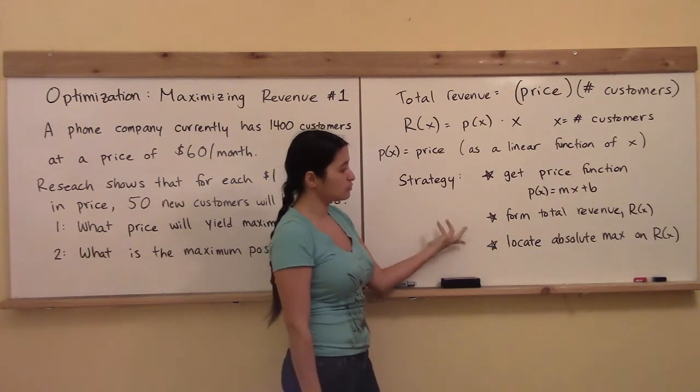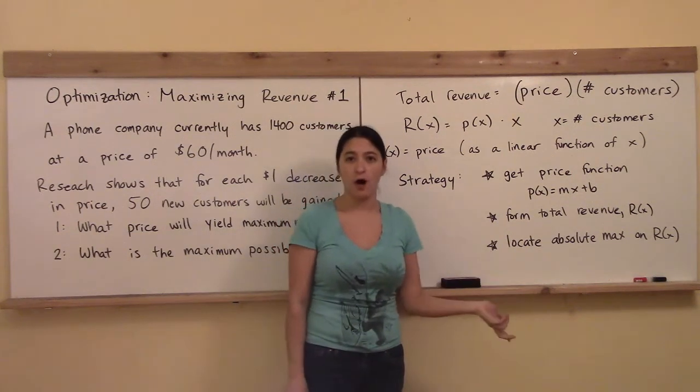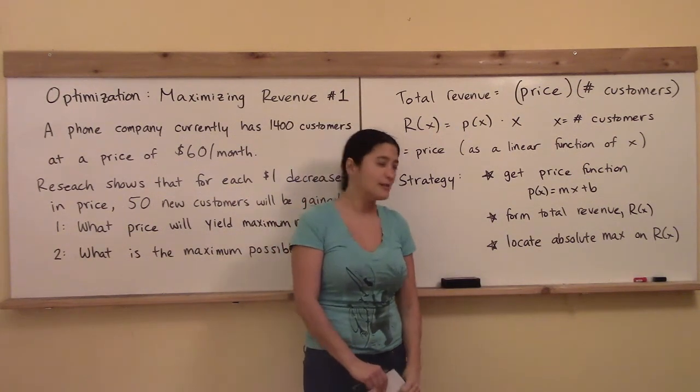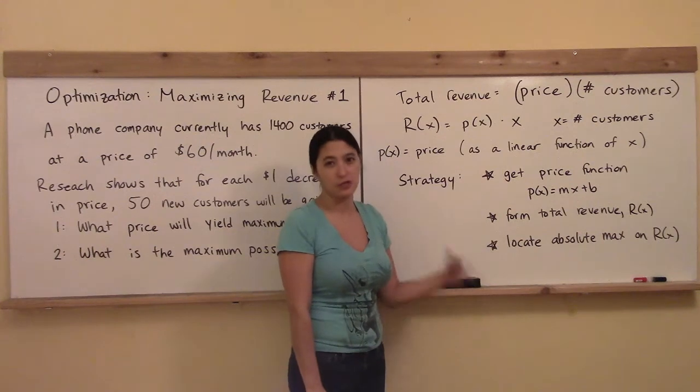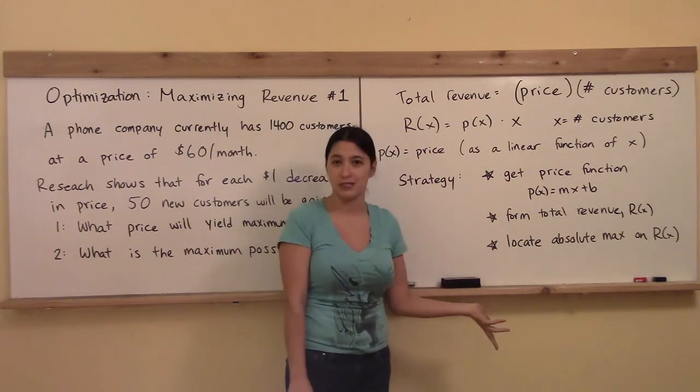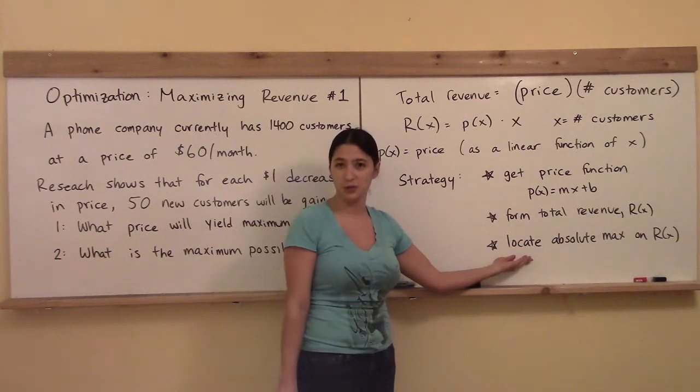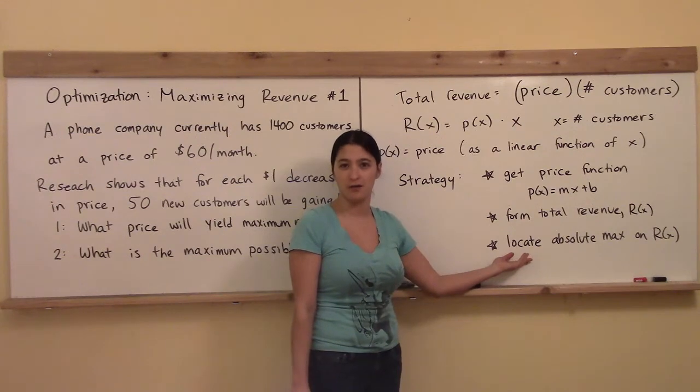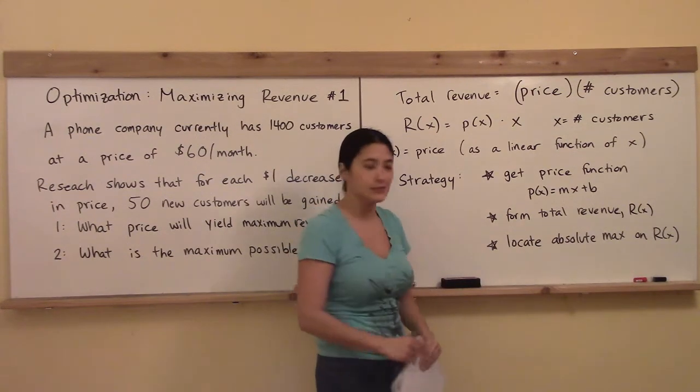And that's great because as soon as we have that total revenue, all we need to do is the calculus, which is take the derivative, locate the relative extrema, compare those with the endpoints, and then we will locate the absolute extrema on R(x). All right, so let's get started.